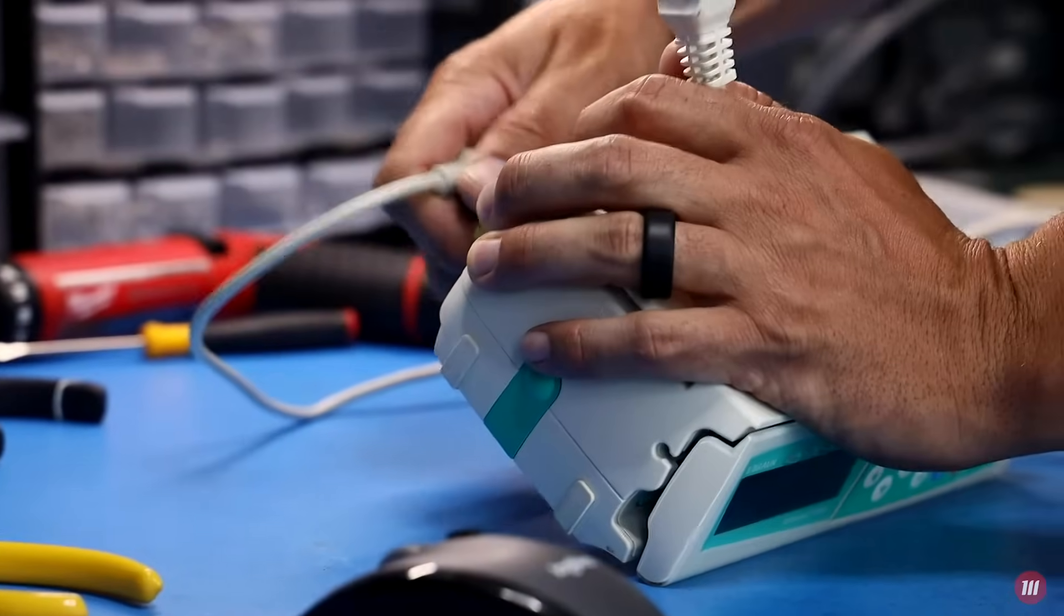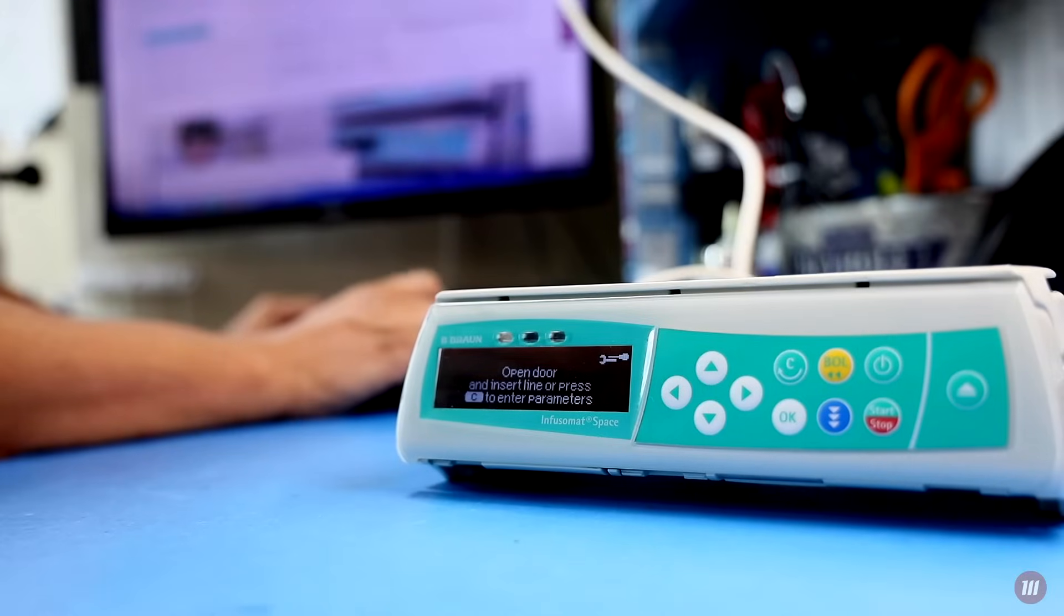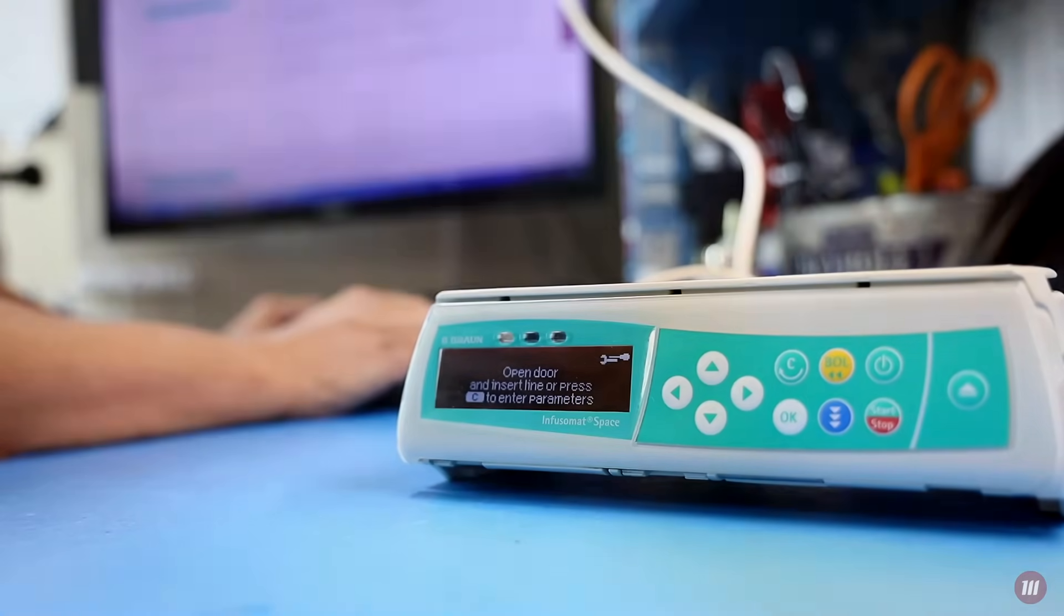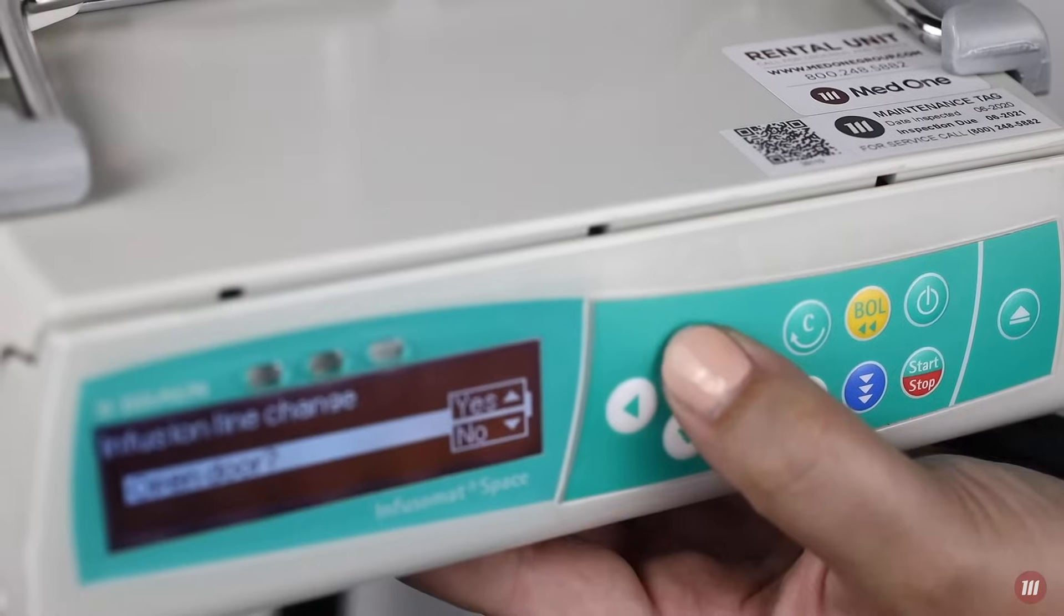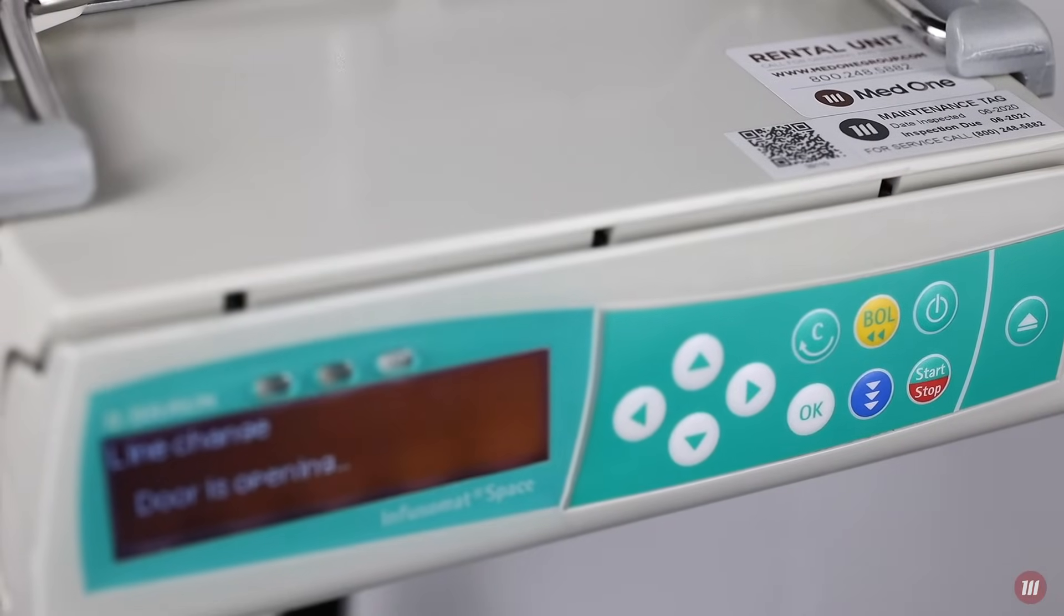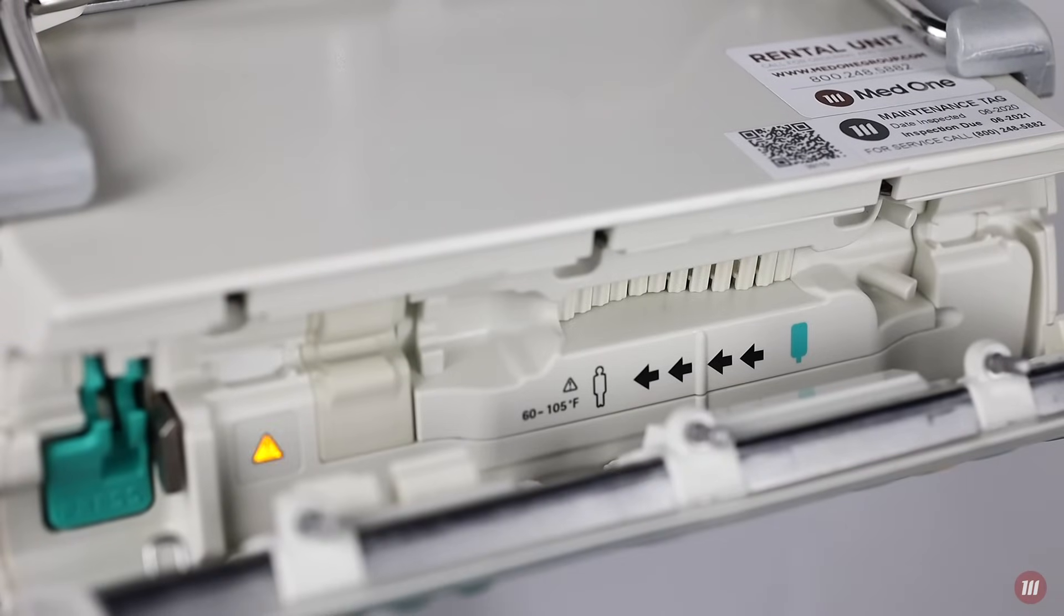The customizable drug library contains clinical advisories to promote better patient safety. Clinicians can use dedicated Bebron tubing sets when operating this IV pump. This pump features a flow rate range of 0.1 to 1200 milliliters per hour.